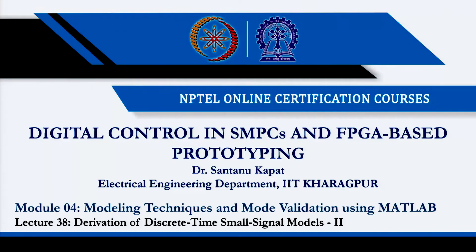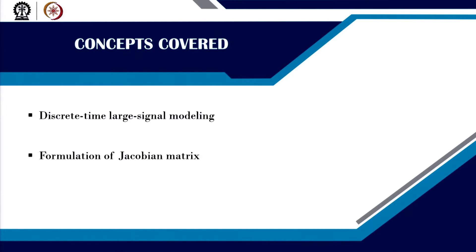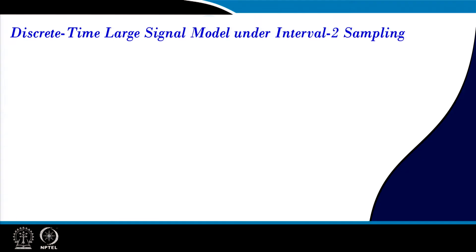Welcome. In this lecture we are going to continue from the previous lecture, where we want to derive the discrete time small signal model straight away from the discrete time large signal model. First we will recapitulate our discrete time large signal model, then I will show how to calculate the Jacobian matrix and how to derive the discrete time small signal model.